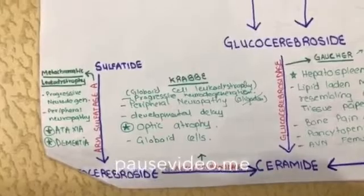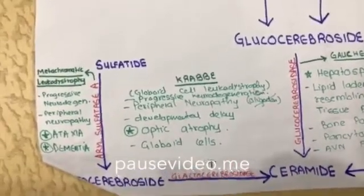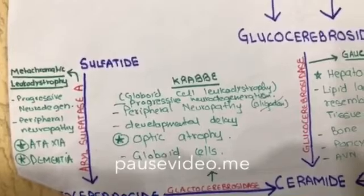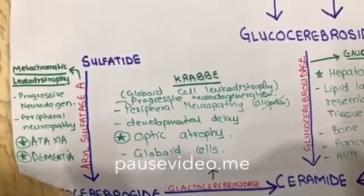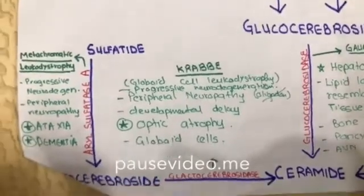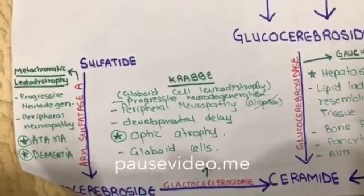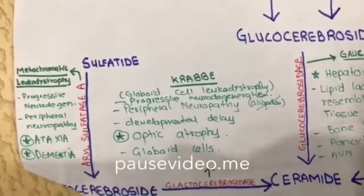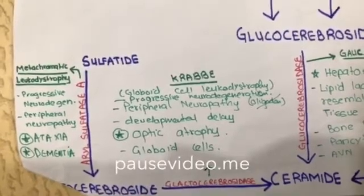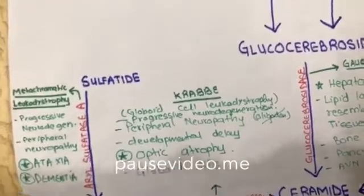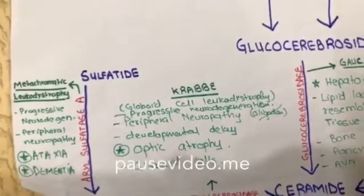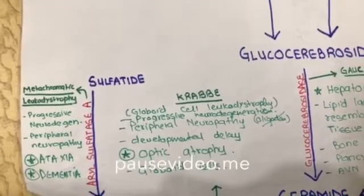We are left with Krabbe Disease and metachromatic leukodystrophy. Remember Krabbe with 'OK' — O for optic atrophy. Whenever you see peripheral neuropathy, developmental delay, and optic atrophy, it will most probably be Krabbe's Disease, with galactocerebroside accumulation. There will also be oligodendrocyte degeneration — O for optic atrophy, O for oligodendrocyte degeneration. In metachromatic leukodystrophy, there will be ataxia and dementia.